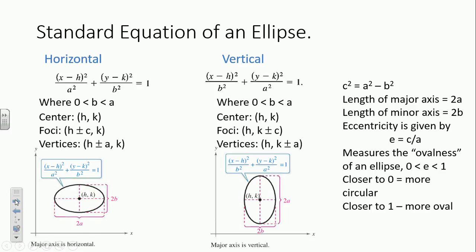One more term to talk about is eccentricity — it measures the ovalness of your ellipse. The eccentricity e is found by taking c divided by a. If e is closer to zero, it's more circular. If it's closer to one, it's more oval.